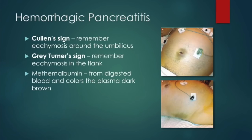Hemorrhagic pancreatitis presents with additional abdominal signs: Cullen's sign (ecchymosis around the umbilicus) and Gray Turner's sign (ecchymosis in the flank). Patients can also have darkened plasma from digested methemoglobin in the blood, which colors the plasma a very dark brown — normally plasma is light and clear, but in hemorrhagic pancreatitis it appears very dark.